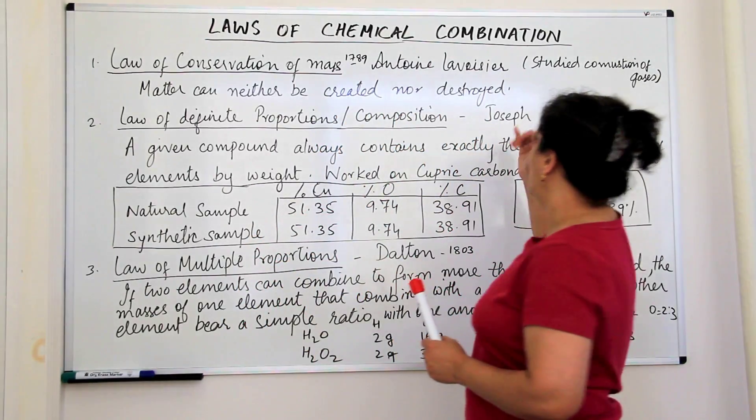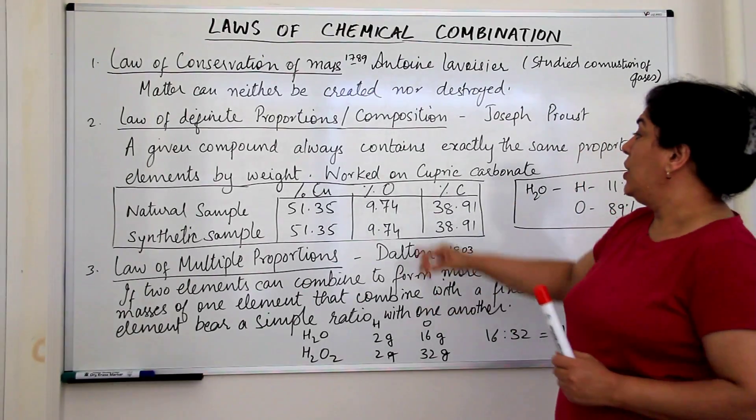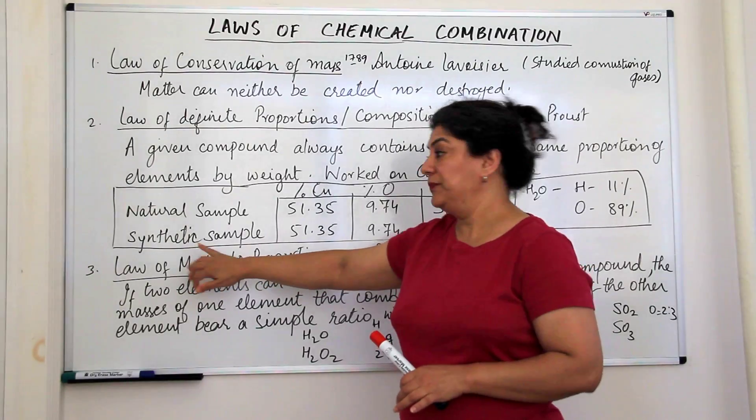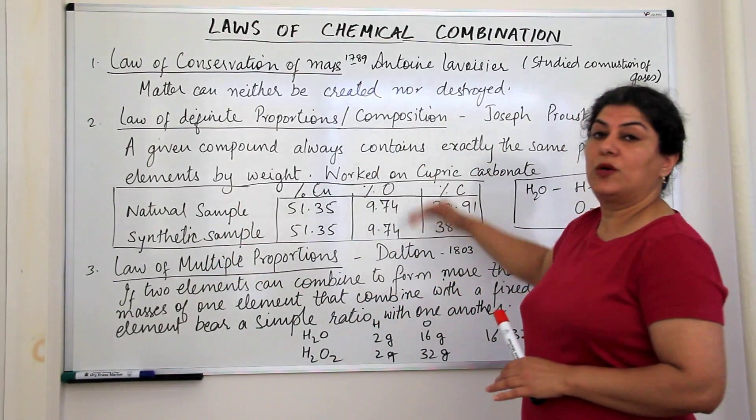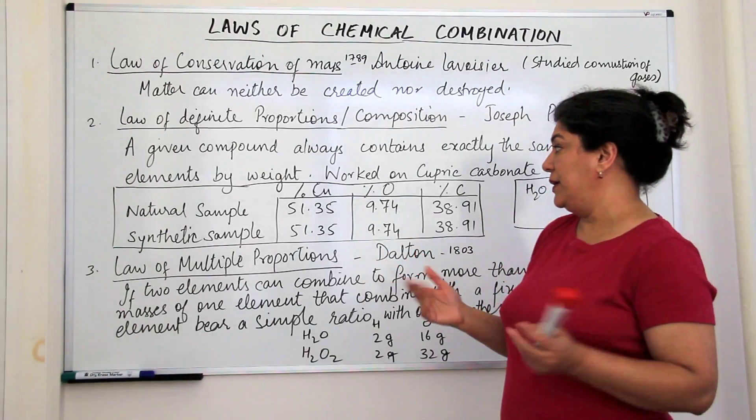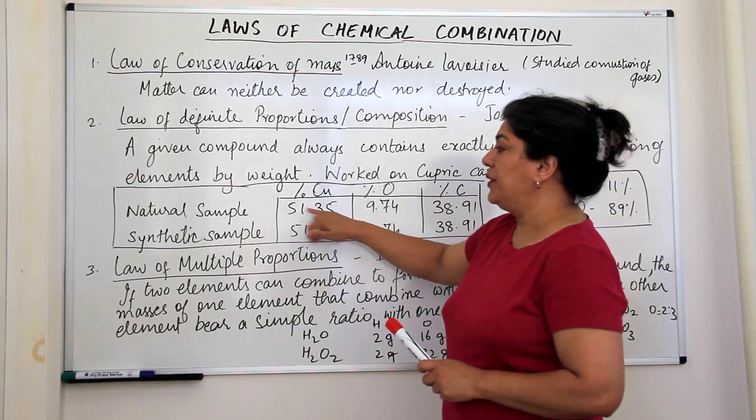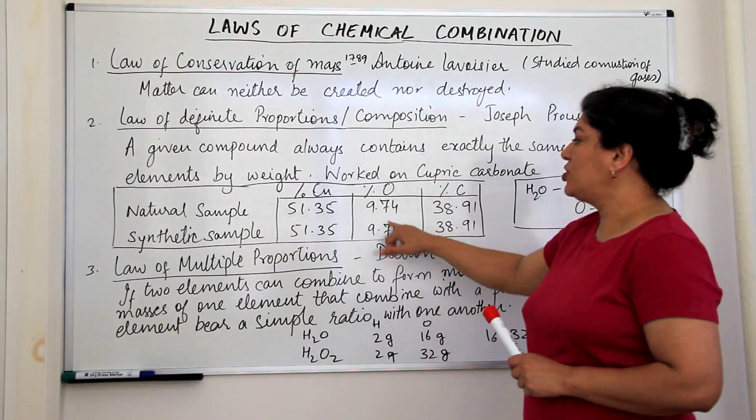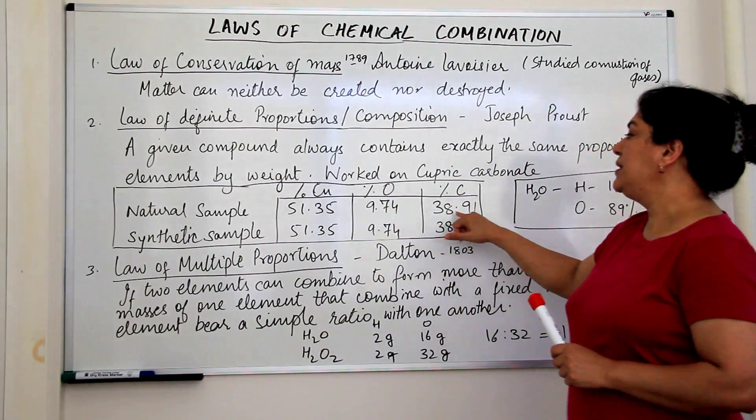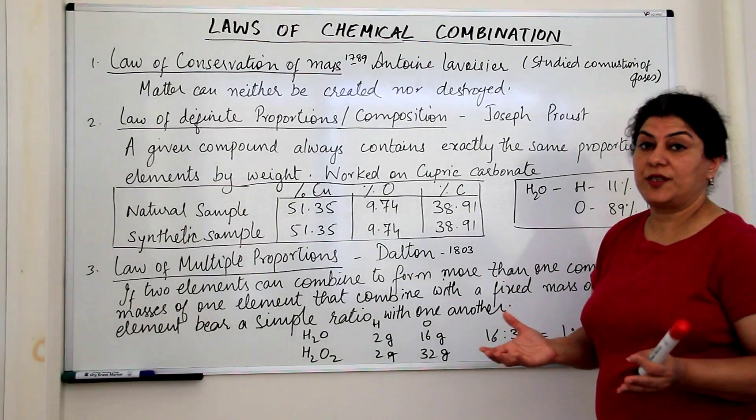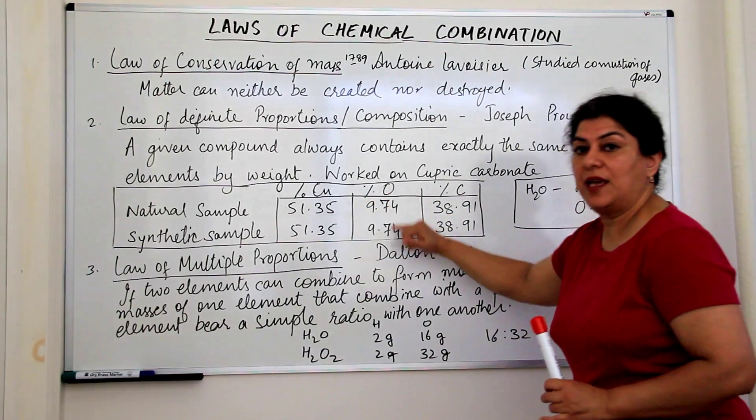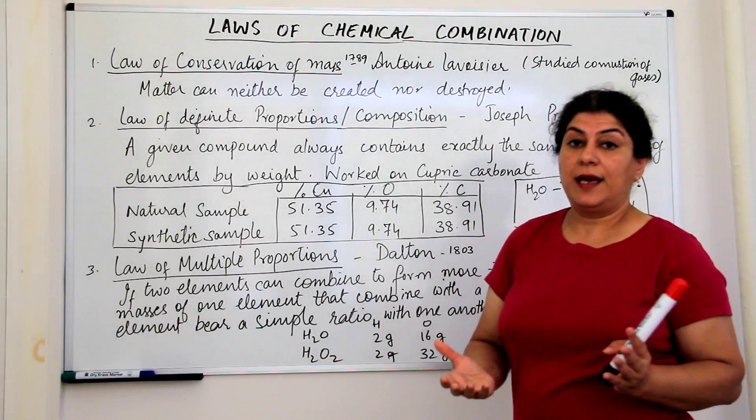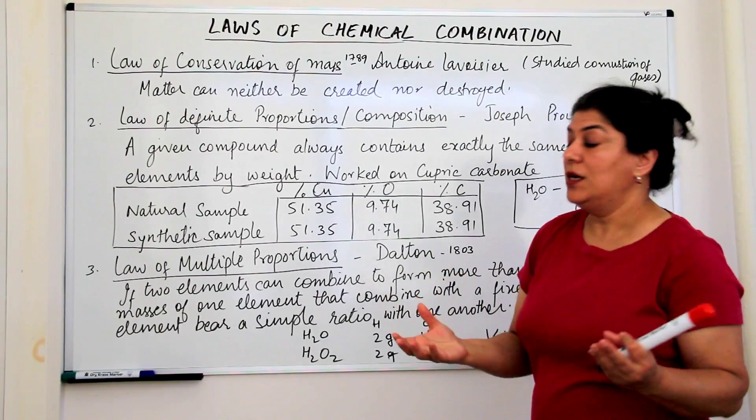What did Proust do? He carried out an experiment. He worked on cupric carbonate and he took a natural sample and a synthetic sample and he found out the mass percentages of all the composite elements. He found that copper in cupric carbonate is 51.35 percent, oxygen is 9.74 percent and carbon is 38.91 percent and this percentage remained the same irrespective of the source of the cupric carbonate that he had or which he carried out the tests on.